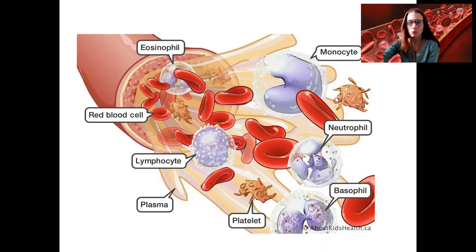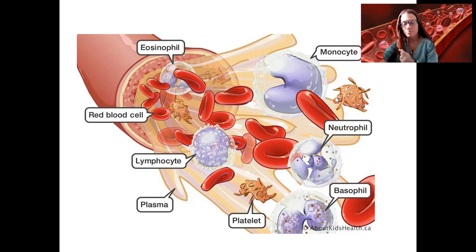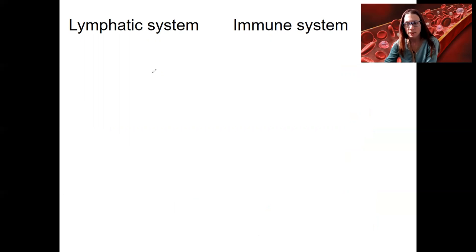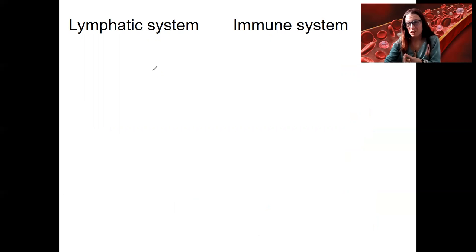The lymphatic system is also a system of vessels. It contains a fluid similar to blood, but a little different. Let's talk about the differences and similarities. First, let's compare and contrast the immune system and lymphatic system. These are commonly mixed up — they have overlap in how they function, but they are different, almost as different as the lymphatic system and the cardiovascular system, which also overlap.